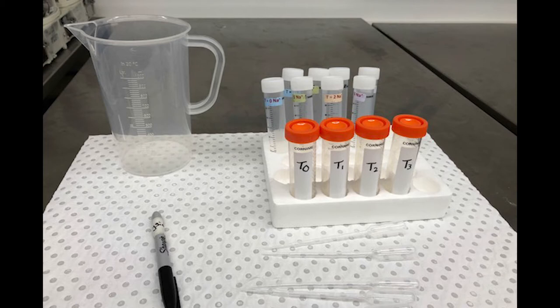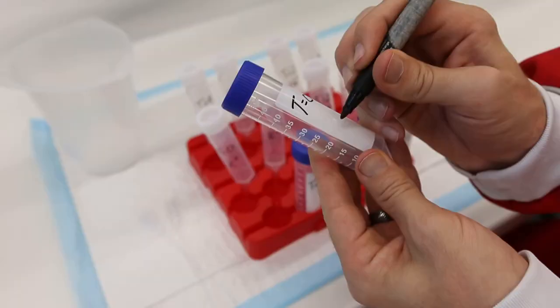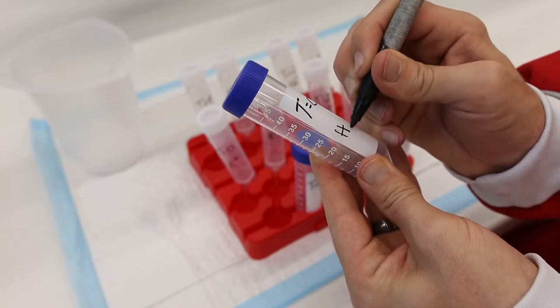For the 50 ml tubes, you will need to add the time point: T equals 0, T equals 1, T equals 2, and T equals 3 to each of the tubes respectively, and also add your initials to each of these tubes.